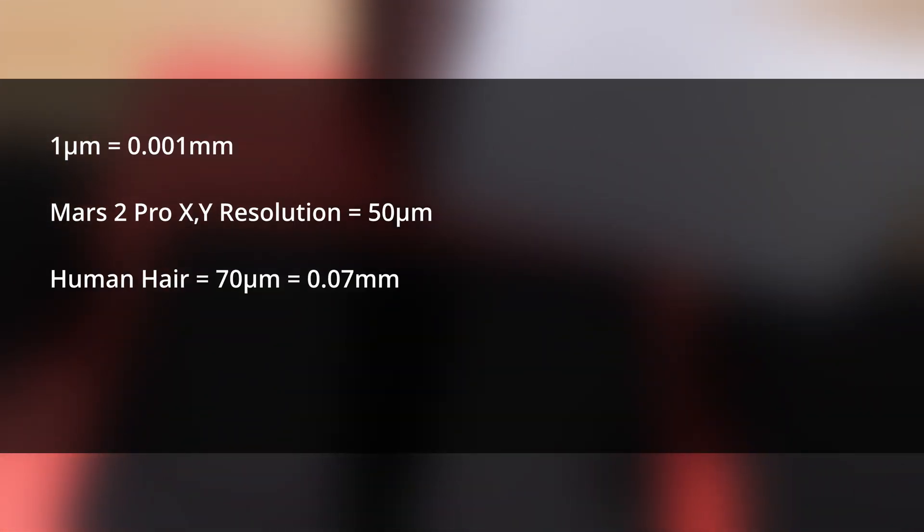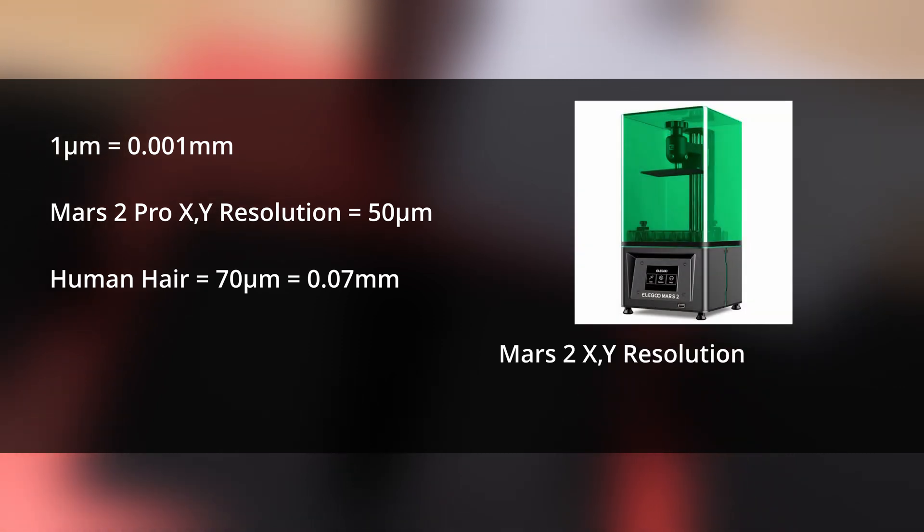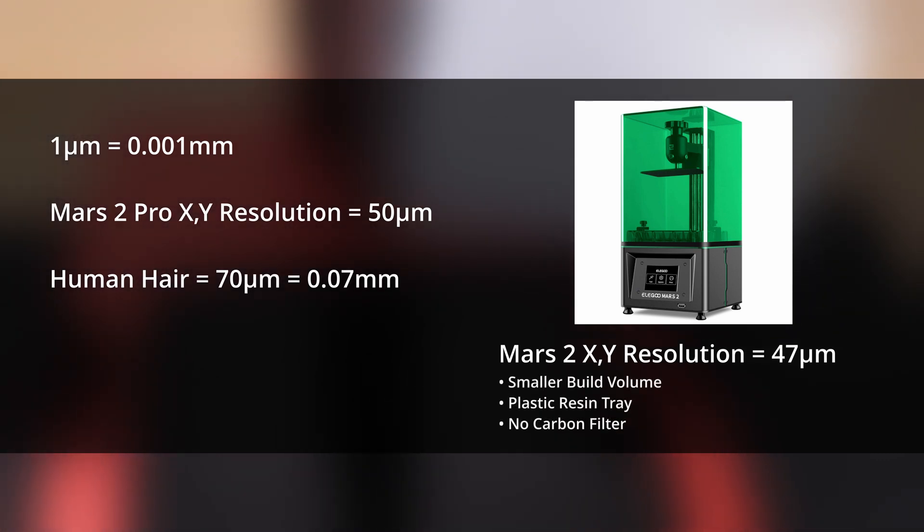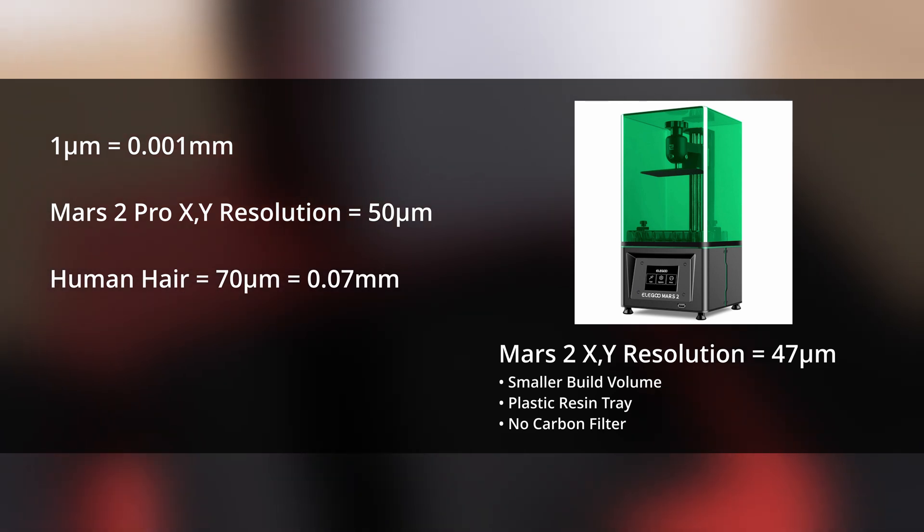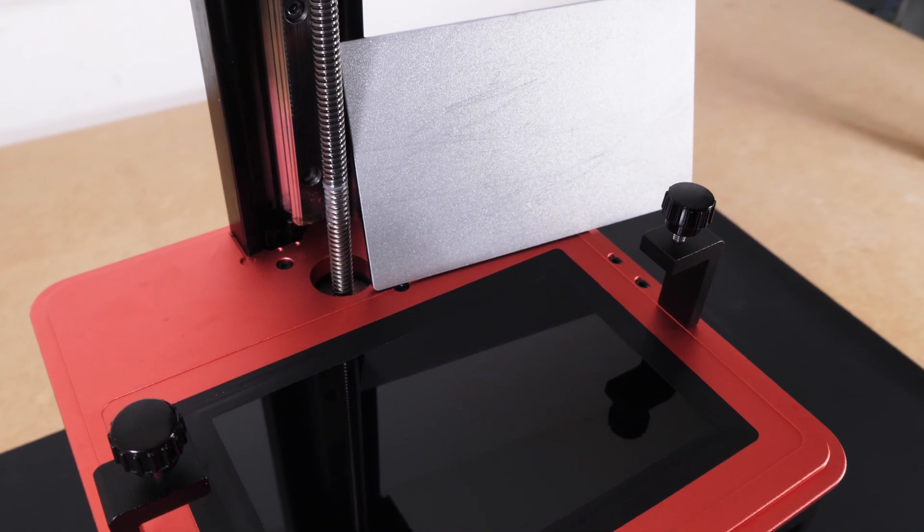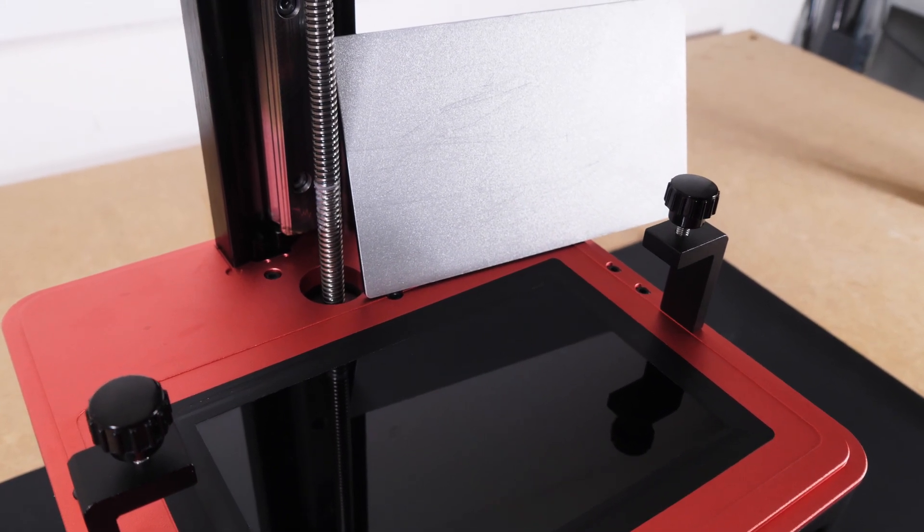When you match the 2K resolution with the build area of the platform, you get an XY resolution of around 50 microns. Just for some perspective, a human hair is 70 microns. But with that said, the Mars 2, the non-pro version, has a better XY resolution of 47 microns. But it has a slightly smaller build volume, and the resin tray is made of plastic, and it has no carbon filter. Anyway, I'm not going to nitpick about 3 microns, as this is less than half the size of a human red blood cell.